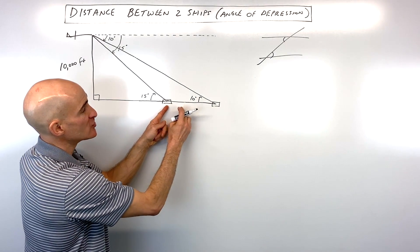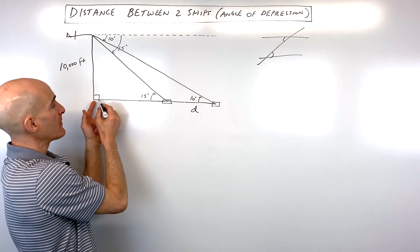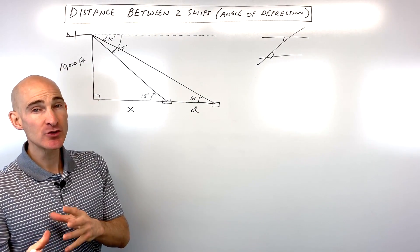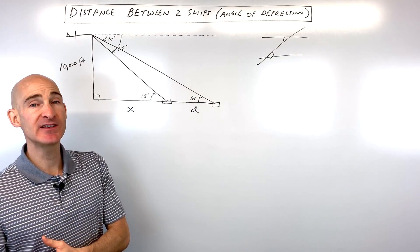Now we want to find the distance between these two boats, these two ships, and let's just call that distance d. This distance here we don't know. Let's just call that distance x. So what we're going to do since we have two variables is we need two equations and we're going to solve that system of equations.